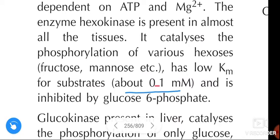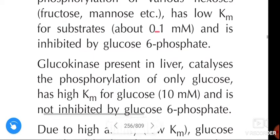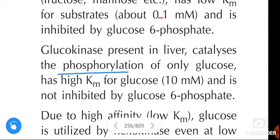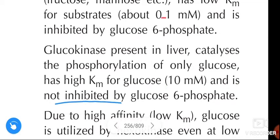Hexokinase is inhibited by glucose-6-phosphate. Glucokinase is present in the liver and catalyzes the phosphorylation of only glucose. It has a high Km value for glucose of about 10 millimolar and is not inhibited by glucose-6-phosphate.